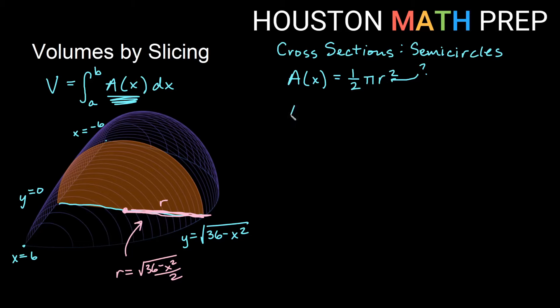Let's go ahead and put that in our A of x. So our A of x is going to equal one half pi, and then we'll have root of 36 minus x squared over 2, that's a radius, squared. If I square, that will take care of the root. If I square the 2 on the bottom, that's going to give me a 4. And then if I have 4 times this 2 that's also on the bottom, that's going to give me an 8. So I really have pi over 8 times 36 minus x squared.